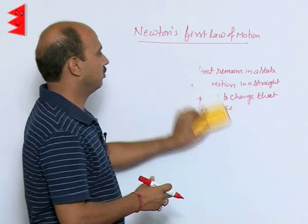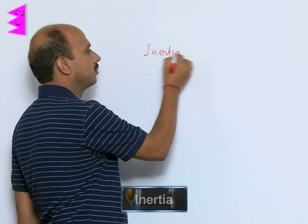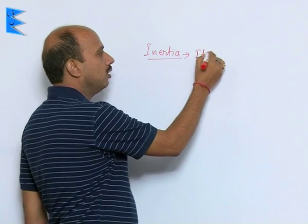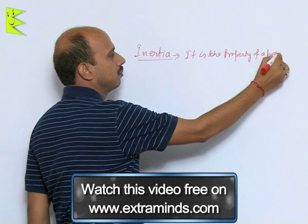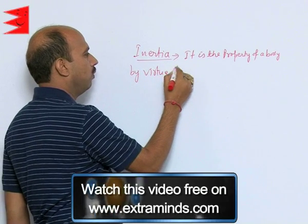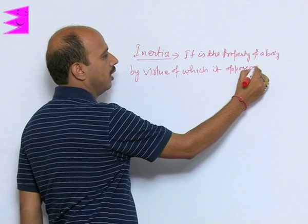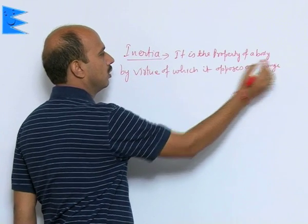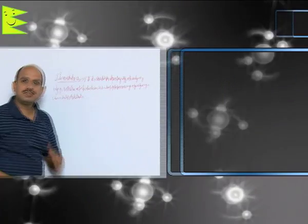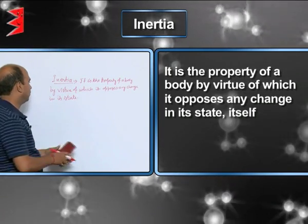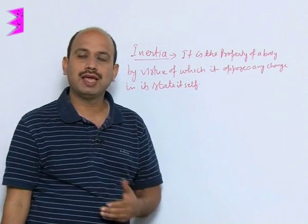We will do the next topic related to this law — inertia. What do we mean by inertia? Inertia is the property of a body by virtue of which it opposes any change in its state. That means it has a tendency to oppose any change in itself.